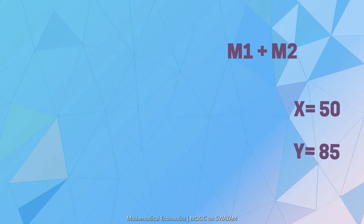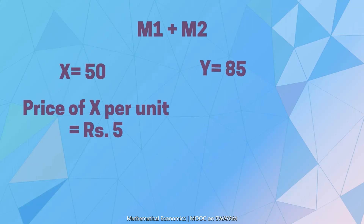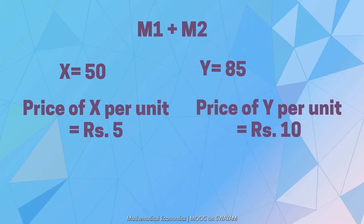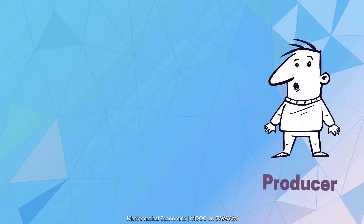Given the price of product X as Rs.5 and that of product Y as Rs.10, the total revenue that the producer earns is equal to 5 into 50 plus 10 into 85, that is equal to 1100.